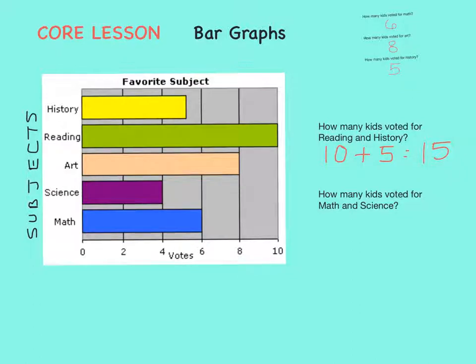What about for math and science? Well, math received six votes and science received four votes. If we want to know math and science, we'll need to add those together. Six plus four equals ten. Ten kids voted for math and science.